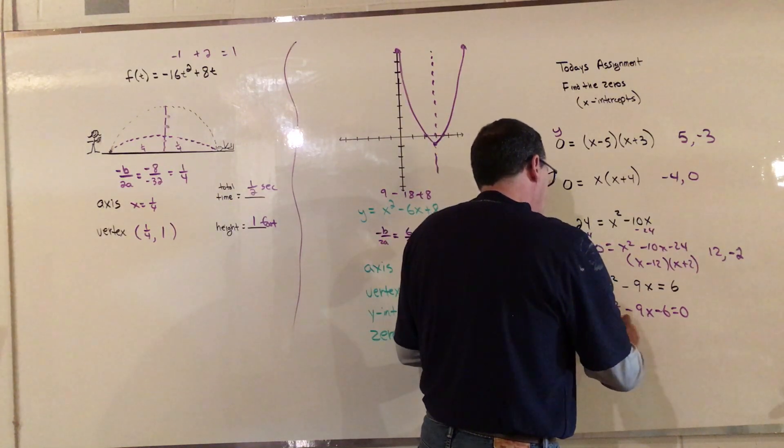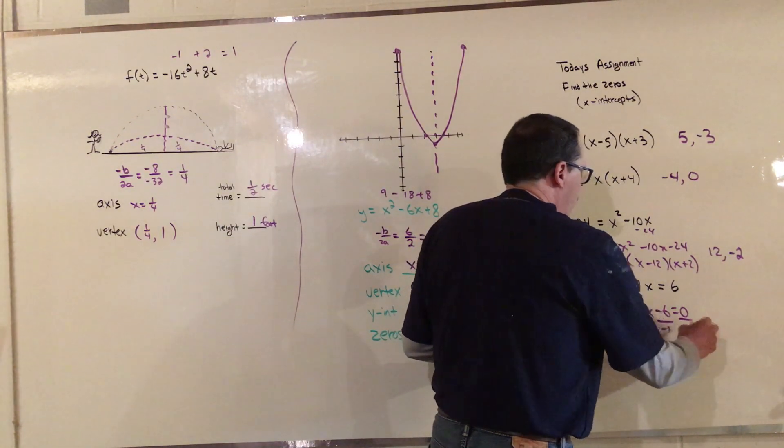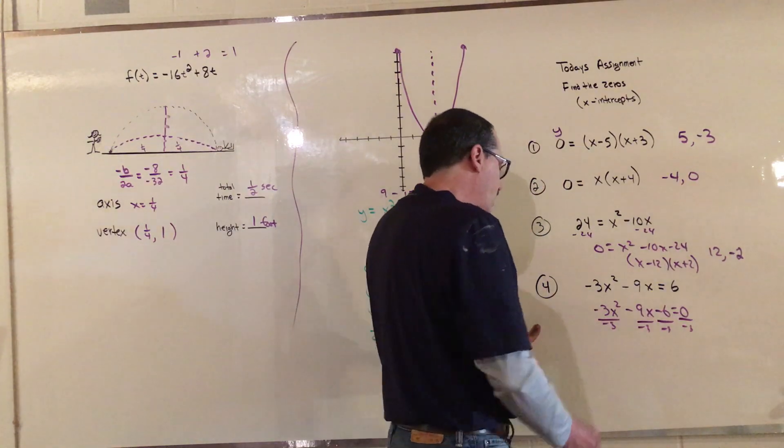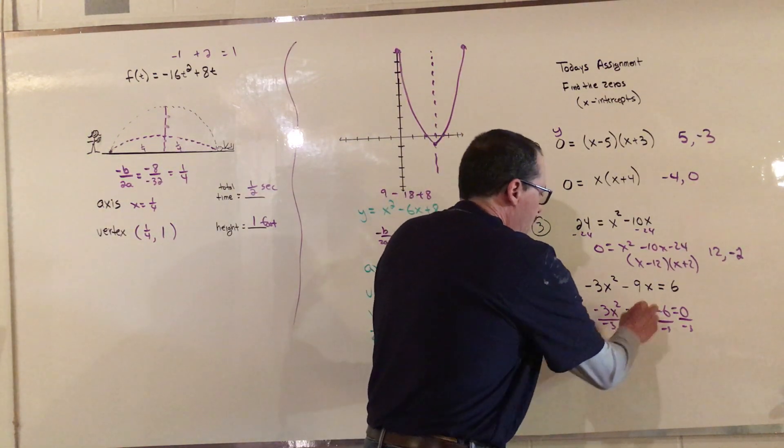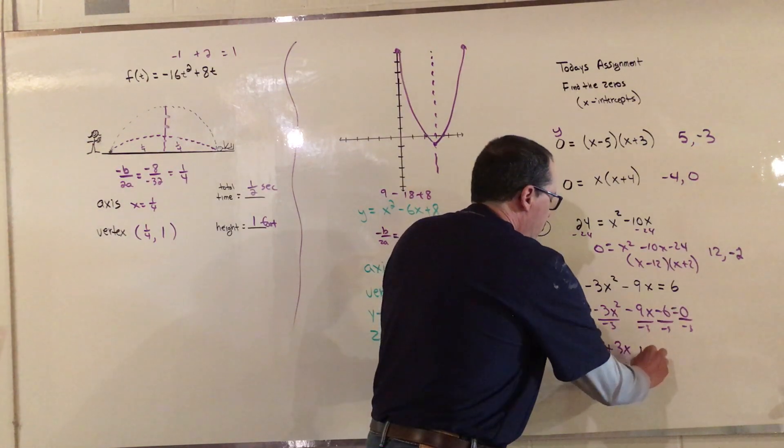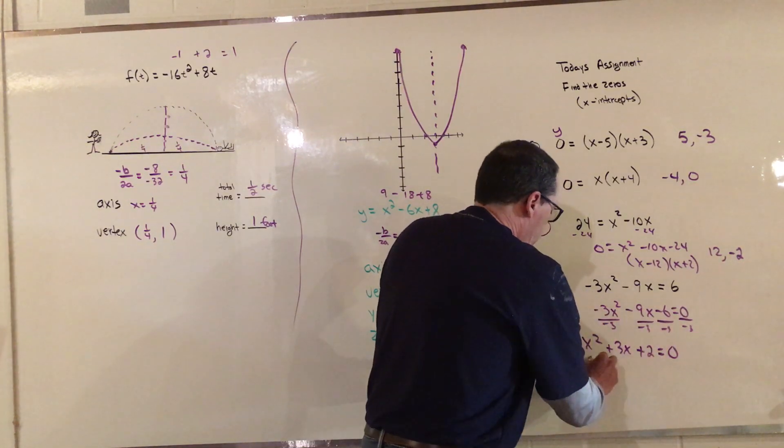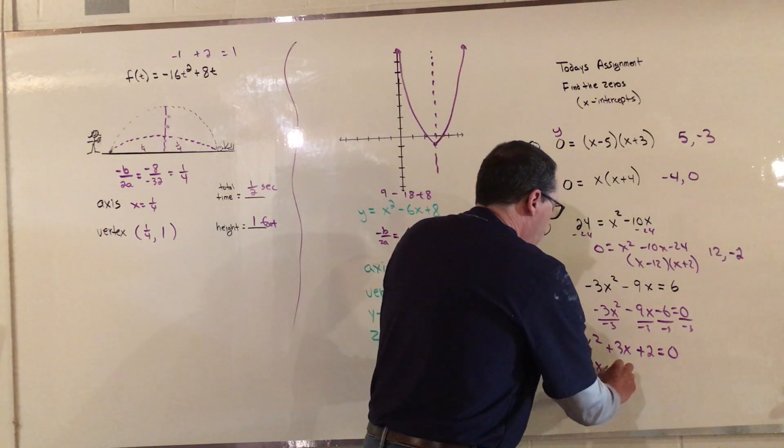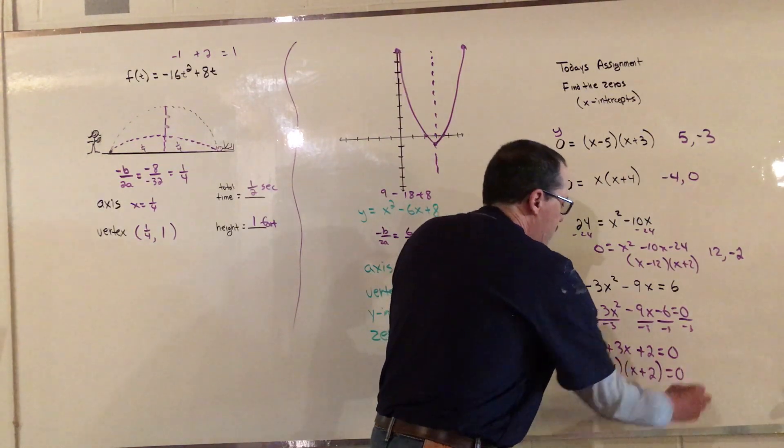Everything there is going to get divided by negative 3. And what you do to one side you have to do to the other. When you do that, when you divide these, you get x squared, and then you get plus 3x, and then you get plus 2 equals 0. 0 divided by anything is 0. And then this will go into x plus 1 and x plus 2 equals 0.